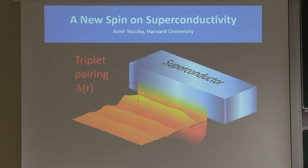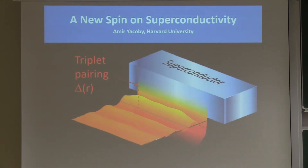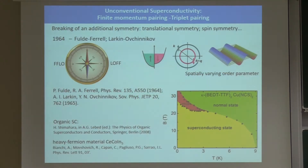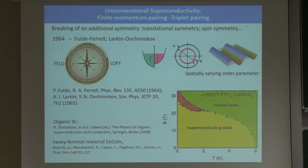I'll explain what I mean by unconventional superconductivity. In particular, the unconventional type I'll be talking about is one that arises from the incompatibility between magnetism and superconductivity. I'll talk about two types of unconventional superconductivity that you'll see eventually come together in one particular realization.